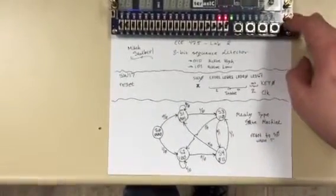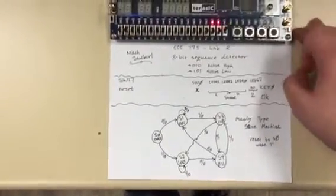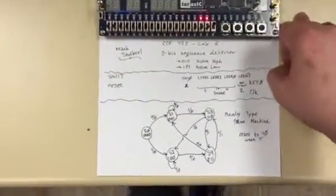And if we switch it, we output a 1. Click it, go back to S3, state 3, which is 110.